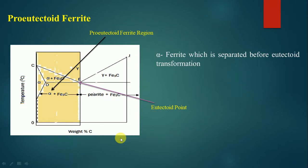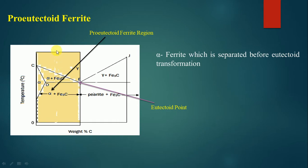We are discussing pro-eutectoid ferrite from the eutectoid transformation picture. This is the eutectoid point, and before achieving this eutectoid point, whatever ferrite is available is called pro-eutectoid ferrite. Suppose at somewhere in between, if we take 0.2 percentage of carbon as an example.